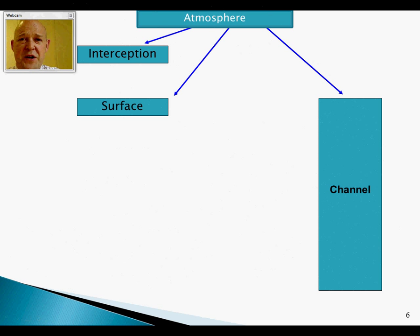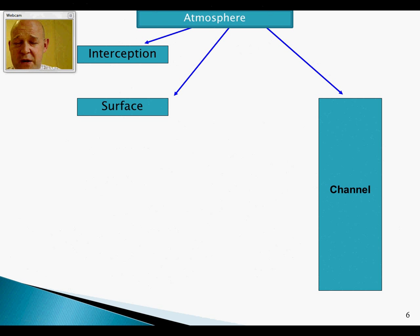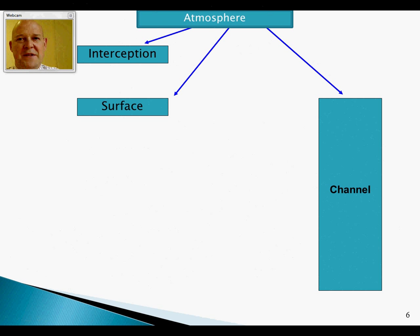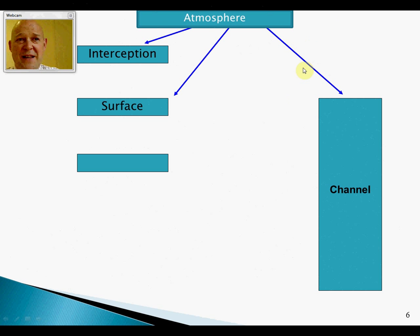The blue line network, within the interfluve, eventually flows into the major channel — the River Severn, for example, whose tentacles spread up into the Welsh and Cambrian mountains. DCP is not that significant in size and we often ignore it completely, but if you want those extra marks, it's worth remembering.